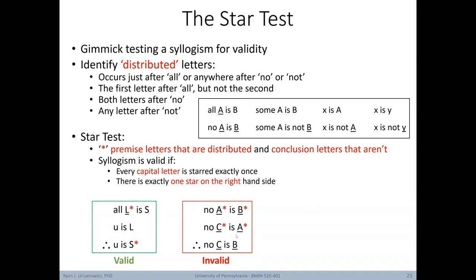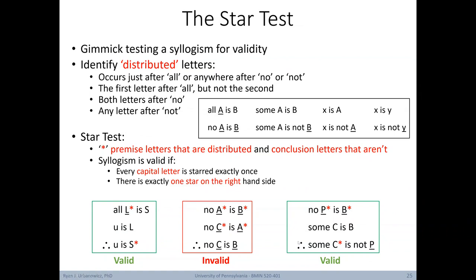Here's an example of an invalid syllogism determined by the star test. Working through the distributed and starred letters, we can tell right away this argument is invalid because 'A' has a star twice — breaking the first rule — and there is more than one capital letter starred on the right-hand side. Without even working through it mentally, we can determine it's an invalid syllogism. One final valid syllogism example: checking each capital letter — P starred once, B starred once, C starred once — and only one capital letter starred on the right-hand side. Therefore, this is a valid syllogism.